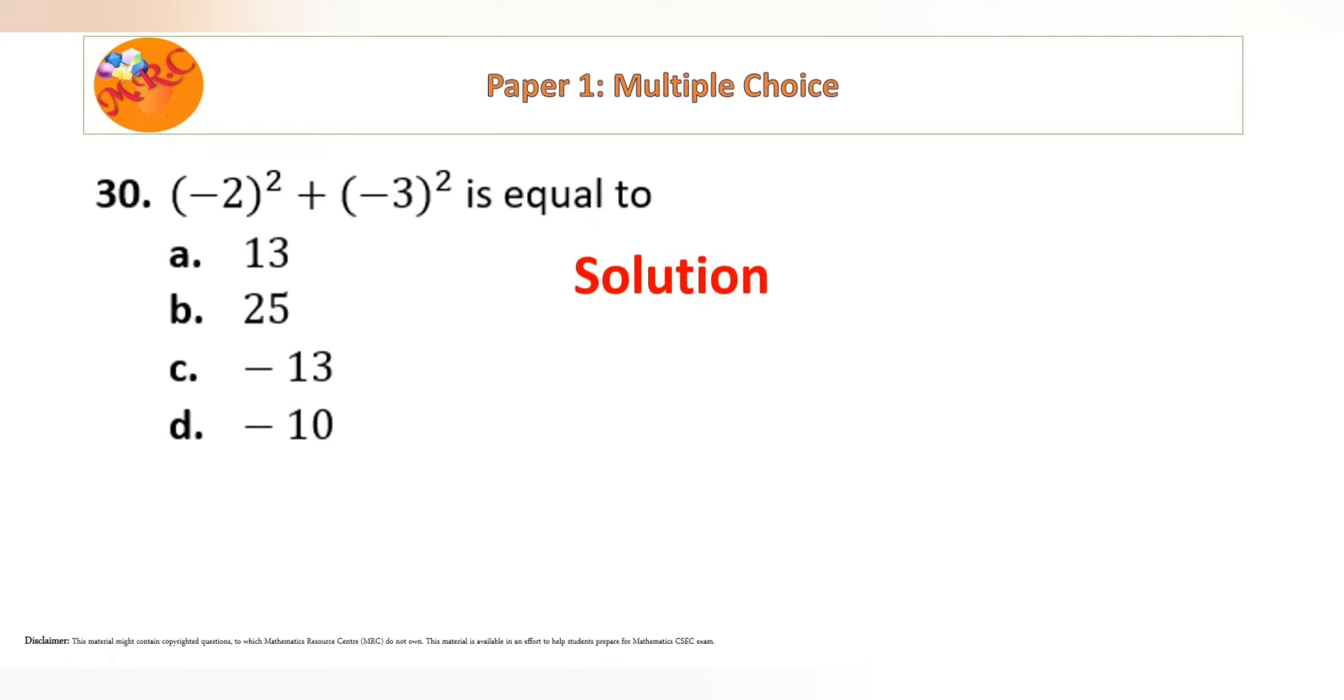The first thing we need to establish is what is the value of negative 2 squared. Negative 2 squared means negative 2 times negative 2, which equals 4. So our first answer for this part is 4.